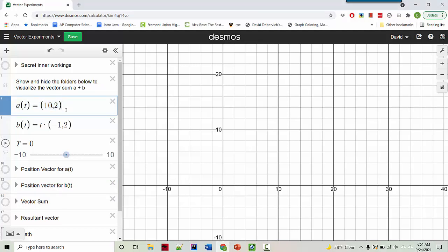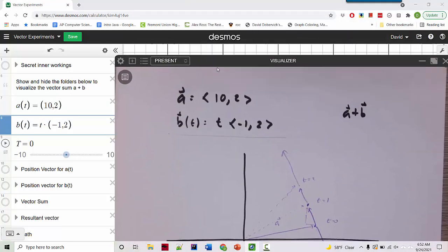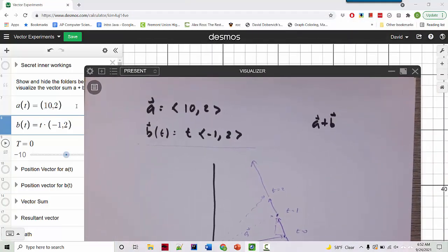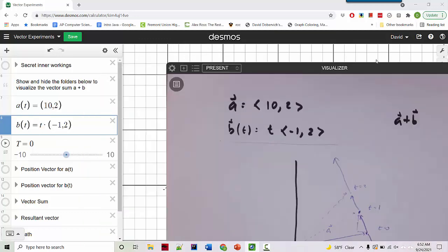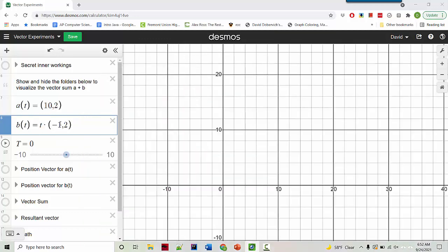So this is the a vector. And it's written using a notation that makes it look like a point. Here's the b vector being scaled by time. But it's the same thing that was on the piece of paper a second ago. You can see. So like a is 10, 2. b is the vector time scaling negative 1, 2. But here's what we can do now.